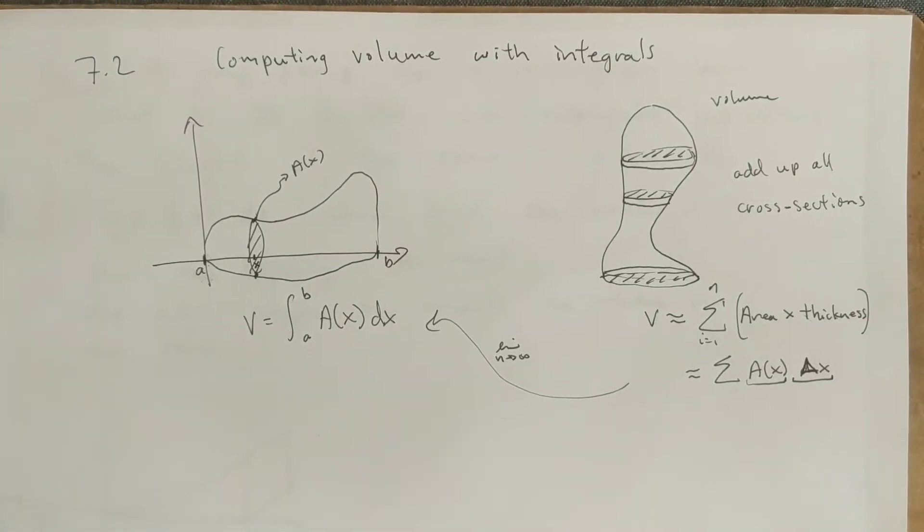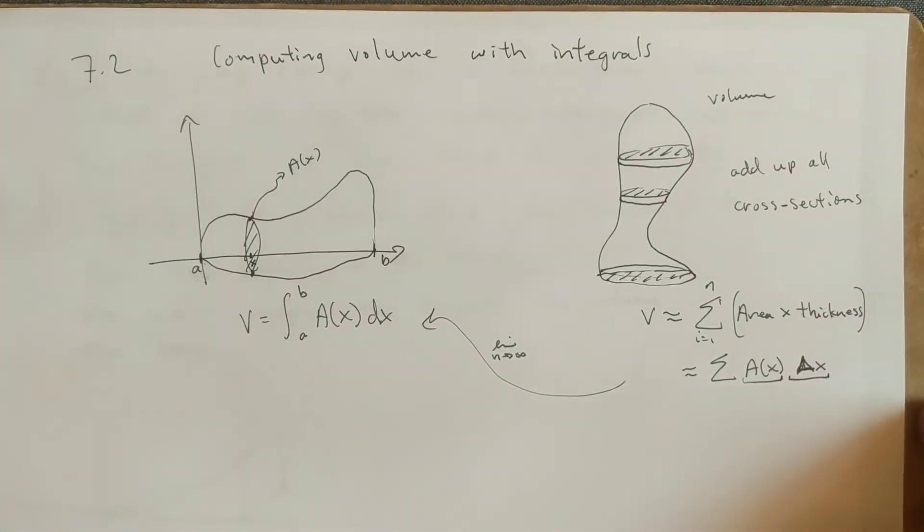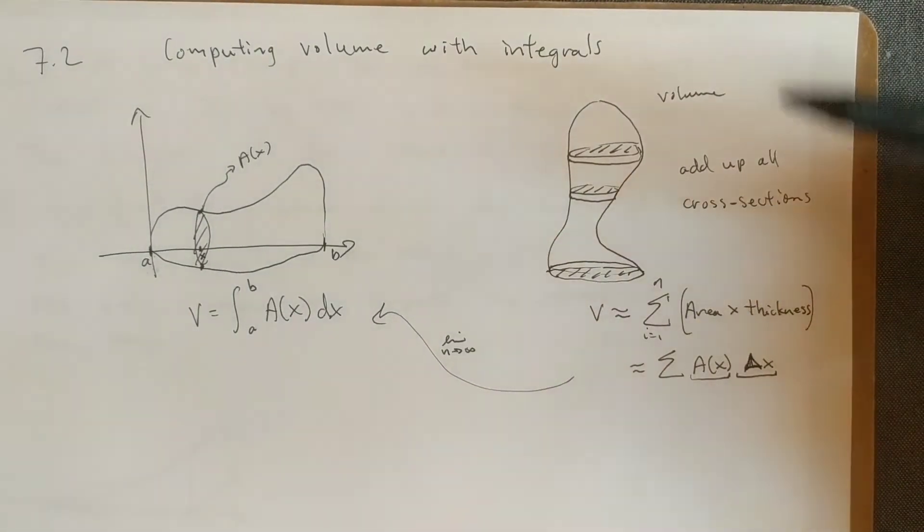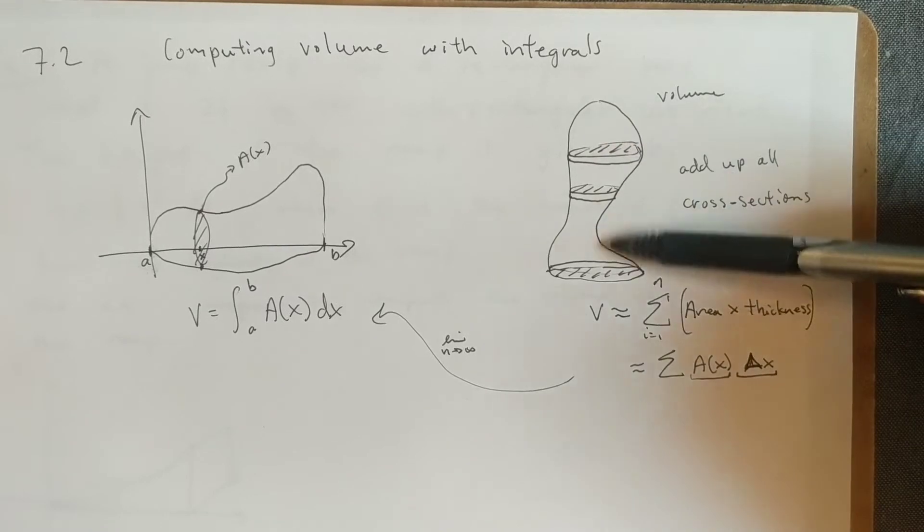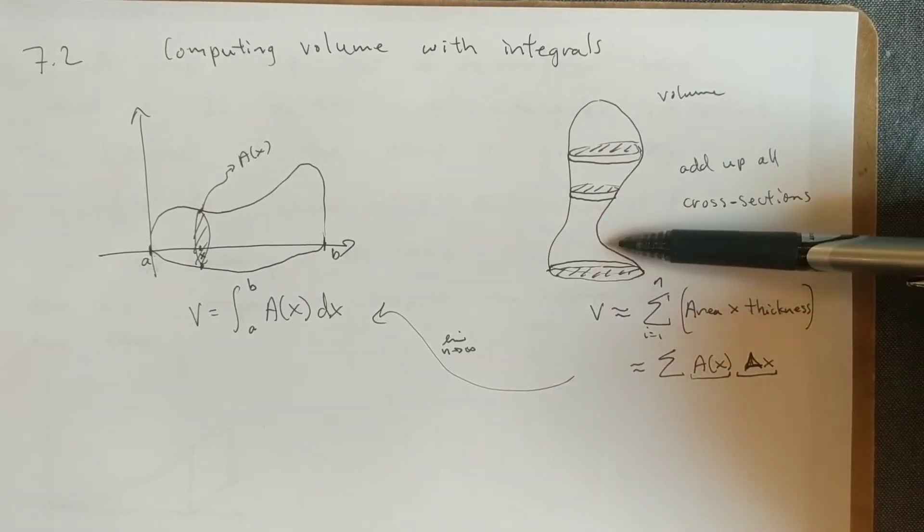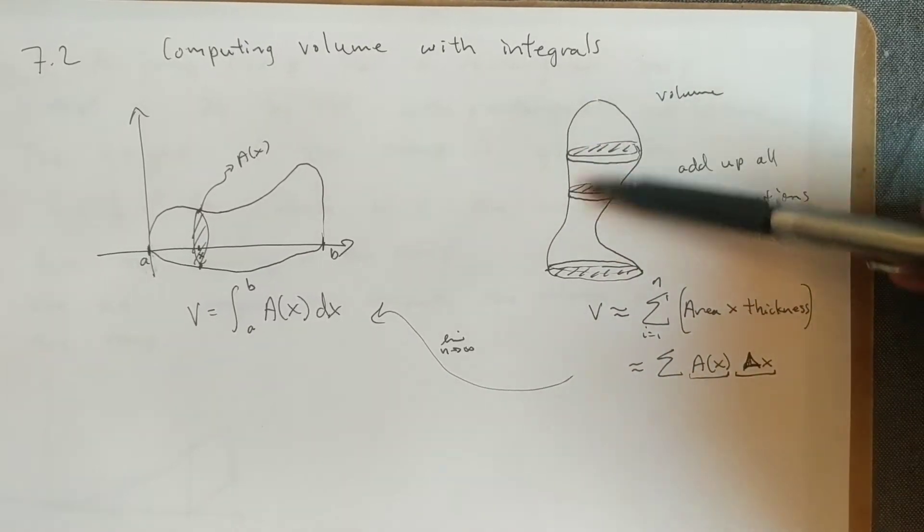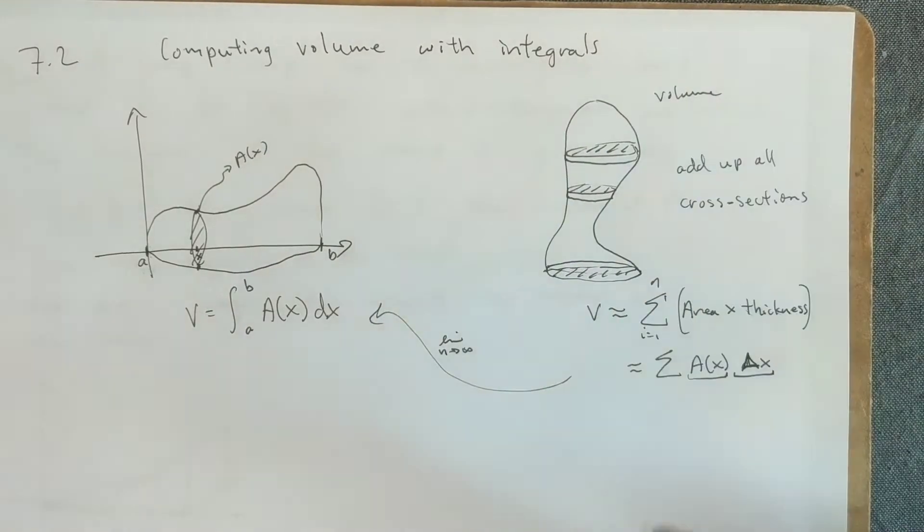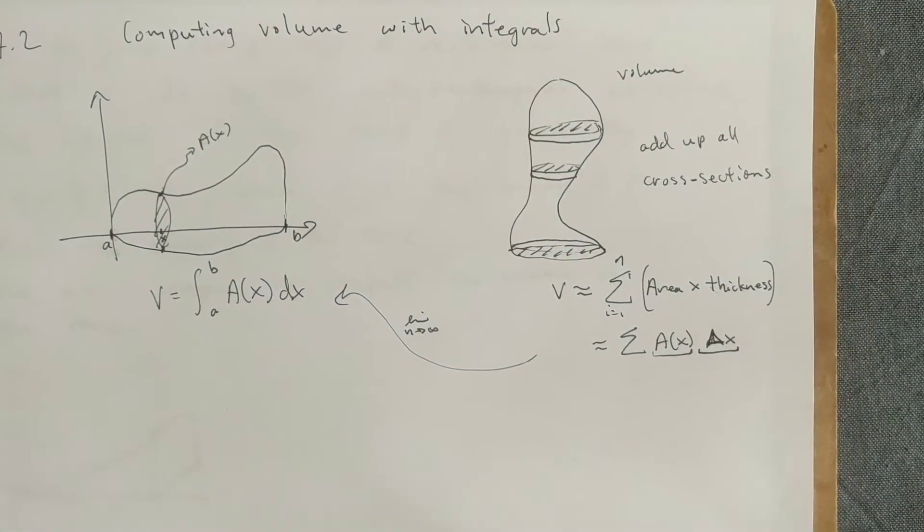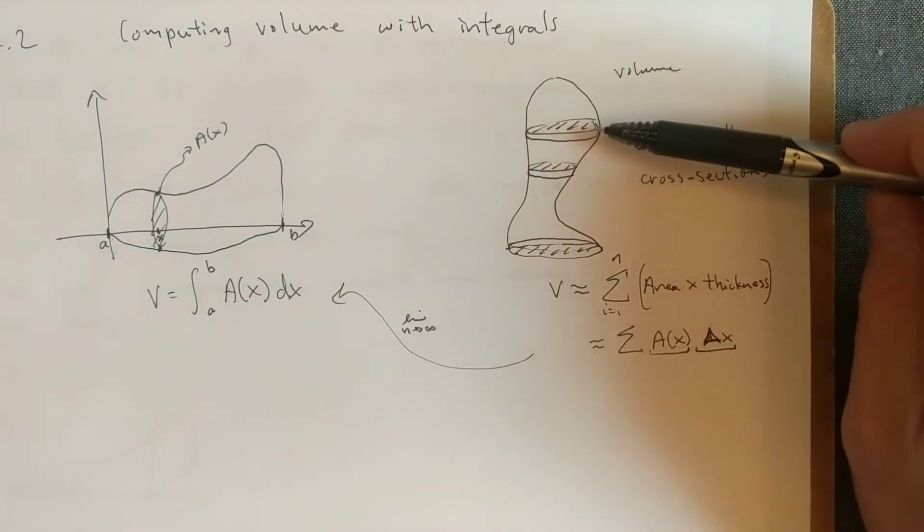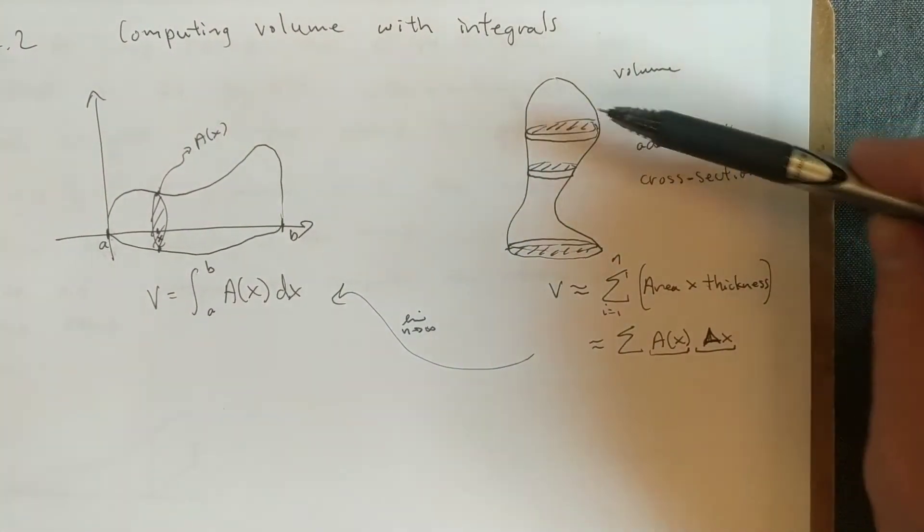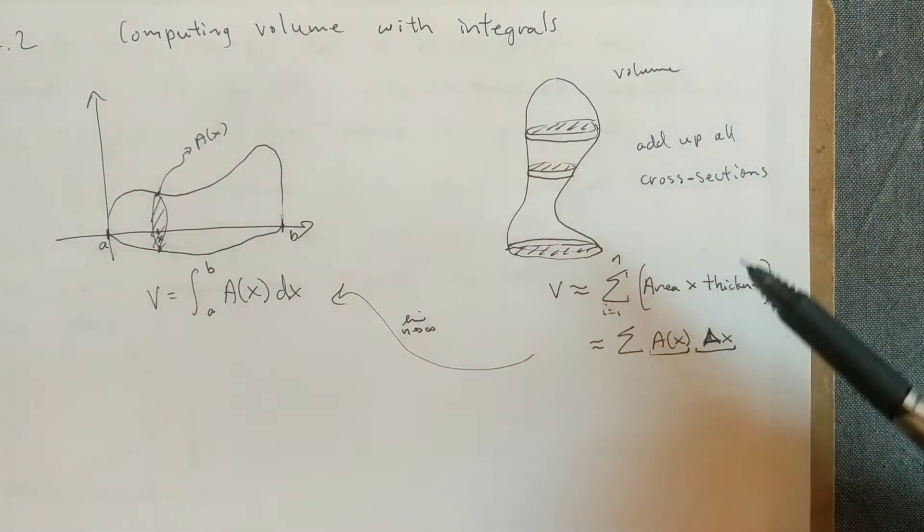All right, today we're going to cover computing volume with integrals. The idea here is that if we have some shape whose cross-sections change as we go through the shape, some sort of weird three-dimensional shape, and we want to compute the volume, one way you could estimate it is that you could take cross-sections with a certain thickness, like an inch thick, and take whatever cross-section it is, compute the area of the top.